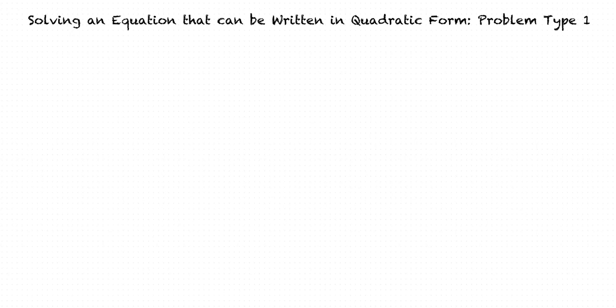This video will cover the topic of solving an equation that can be written in quadratic form, problem type 1. Let's take a look at an example problem so we can get a better understanding of this type of problem. We are asked to solve the following equation: x to the 4th minus 5x squared plus 4 equals 0.